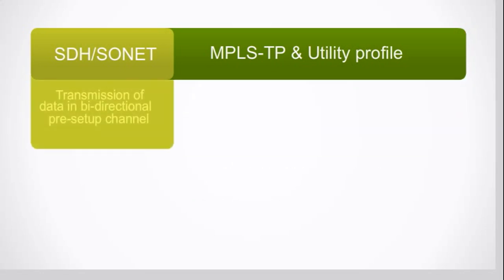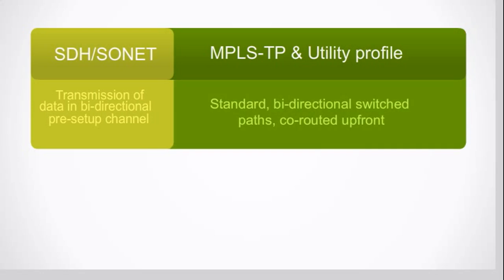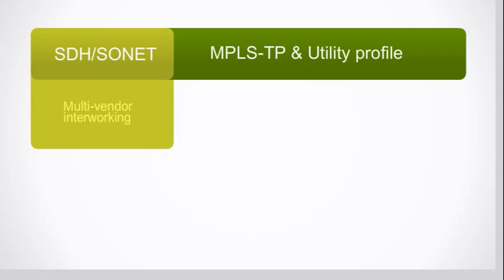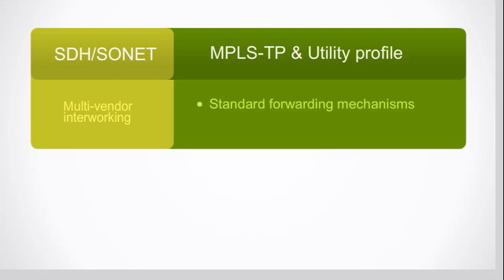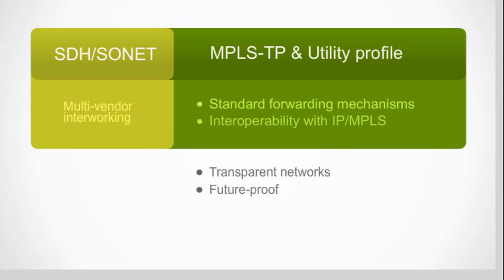SDH/SONET transmits data in a bi-directional pre-setup channel, and MPLS-TP uses standard bi-directional switched paths. These are co-routed up front to avoid the differential delay issues which can occur in an IP MPLS environment. The popularity of SDH/SONET is largely due to high-level interworking between vendors thanks to standardization efforts, and MPLS-TP uses the same forwarding mechanisms already available on the market, guaranteeing interoperability with IP MPLS and giving you transparent, future-proof networks.